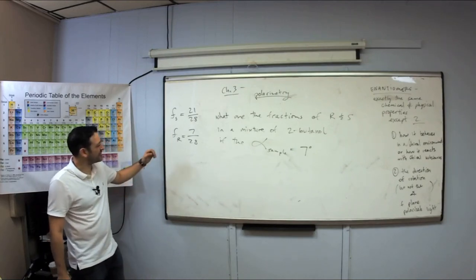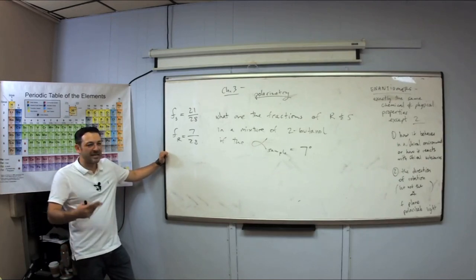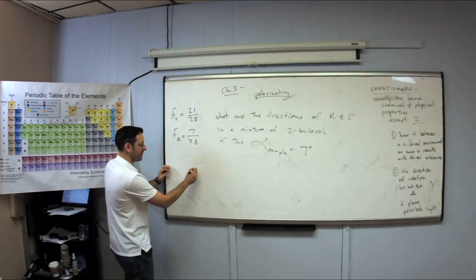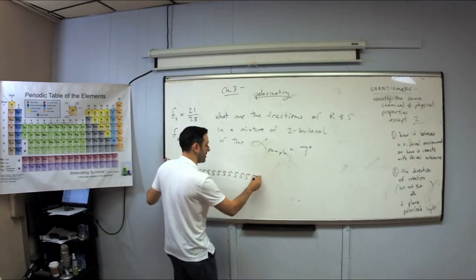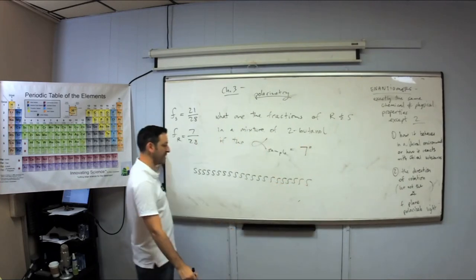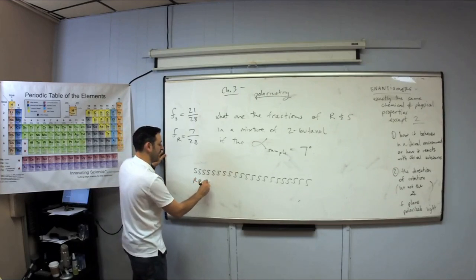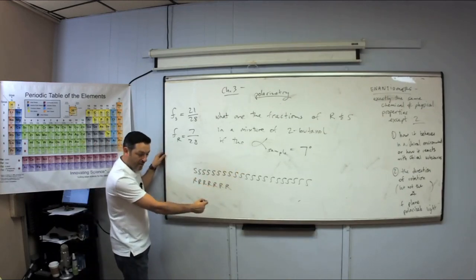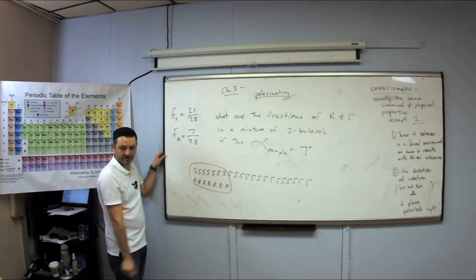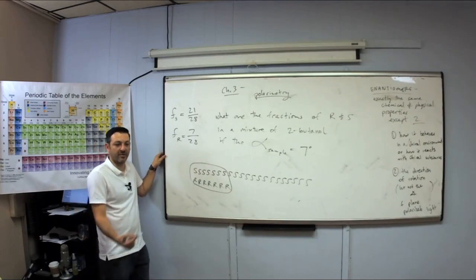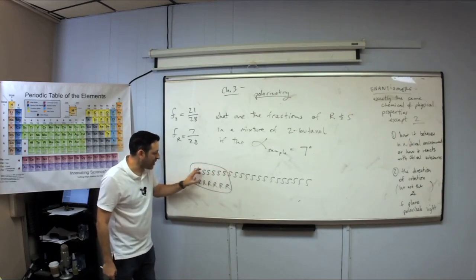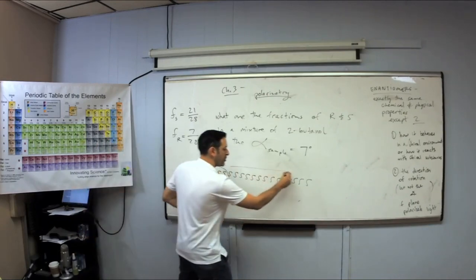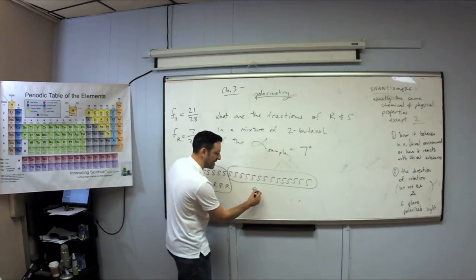Students often have trouble with this because they're trying to make it mathematical rather than conceptual. Imagine I drew 21 S's and 7 R's. You take the lesser number — not the 21 but the 7 — because these 7 will cancel out 7 of the S's. The smaller number cancels some of the bigger number. This portion of my sample is not rotating light because every R cancels one S. It is the remaining portion of the sample that is rotating light — that is the enantiomeric excess. The circled portion is the racemic portion.